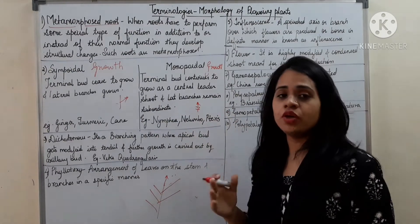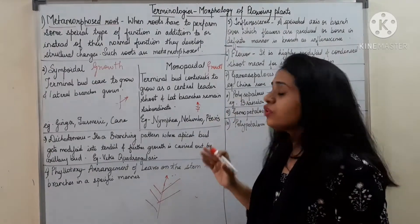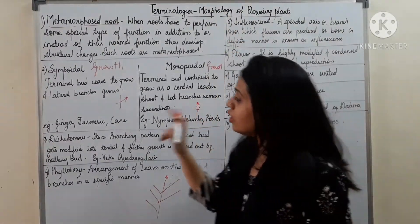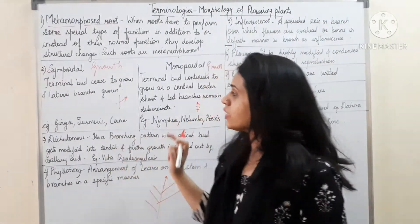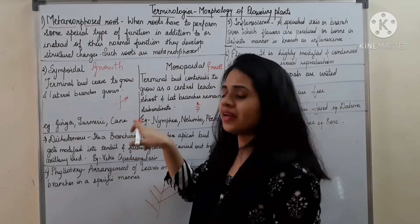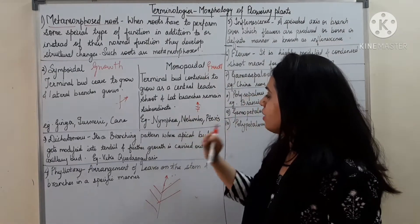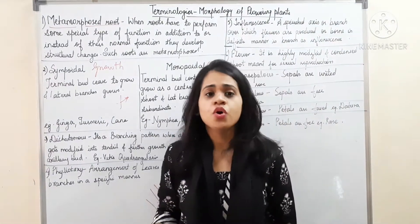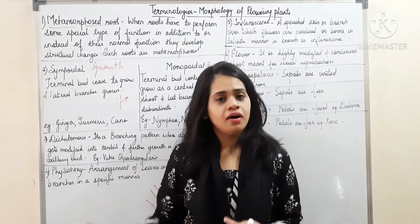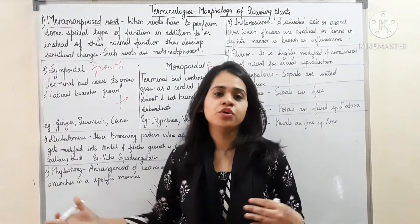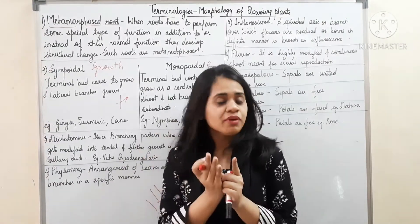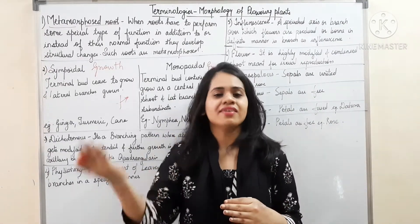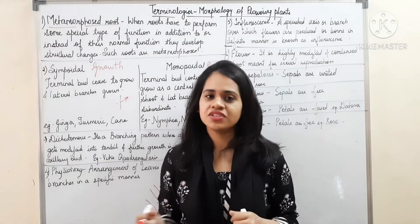Laterally, the growth is not as much as compared to the growth which takes place on the terminal part. Examples in sympodial growth are ginger, turmeric, and Canna. And in monopodial growth, examples are Nymphaea, Nelumbo, and Trapa. These can be asked in MCQs — 'Following are plants which show monopodial growth, except' — or in match-the-column questions.